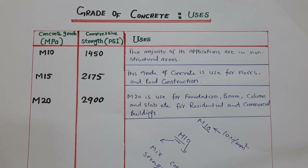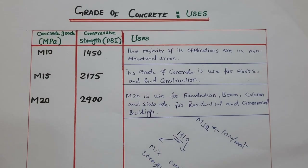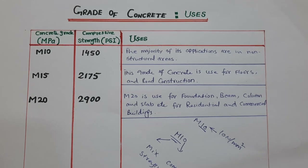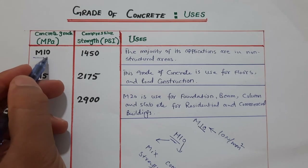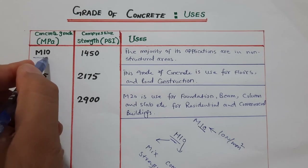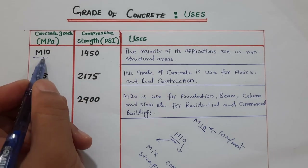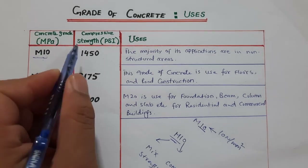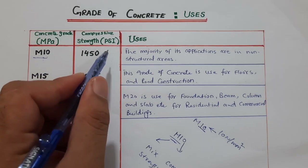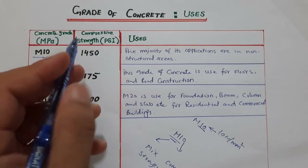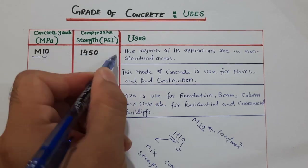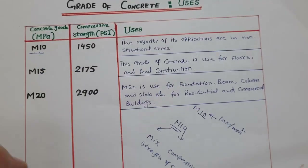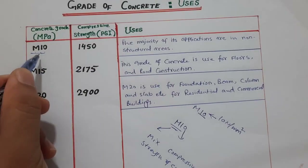Different grades of concrete are used for different construction works. For M10, M stands for mix and 10 is the characteristic strength. The compressive strength of M10 in PSI (pounds per square inch) is 1450 PSI.